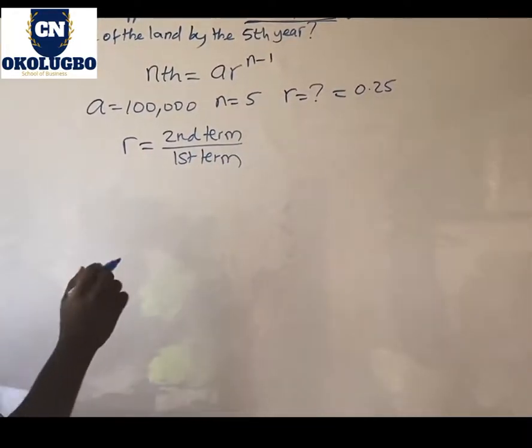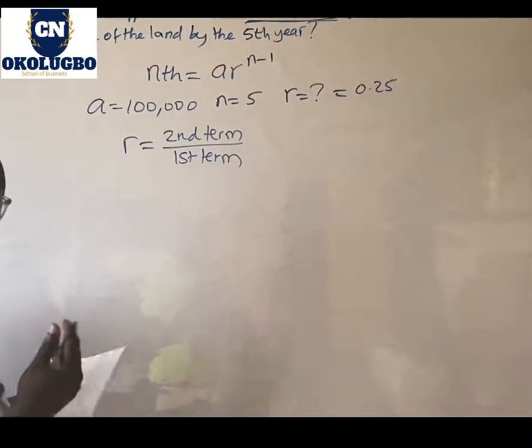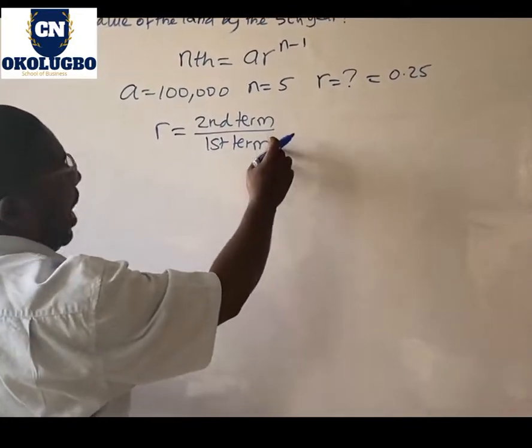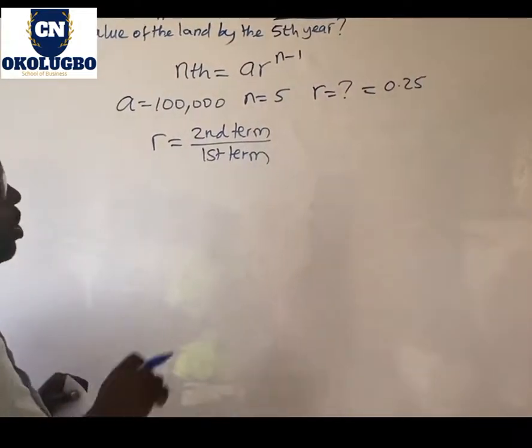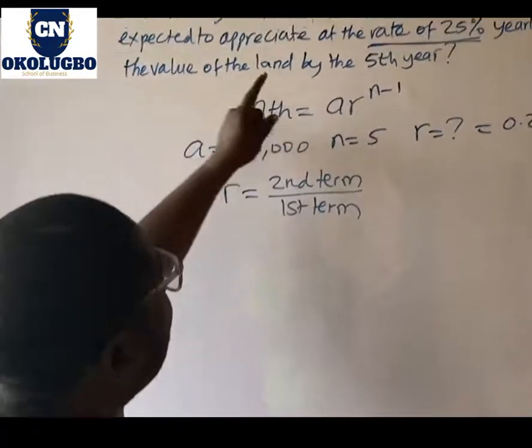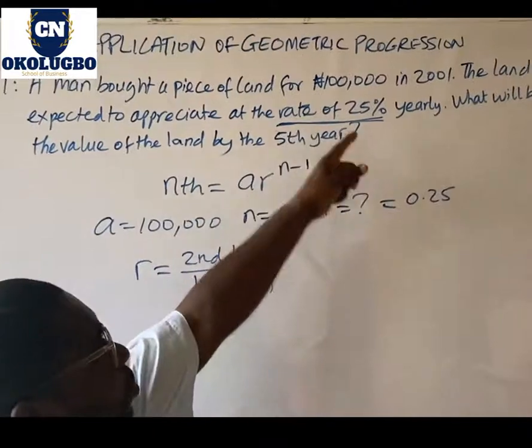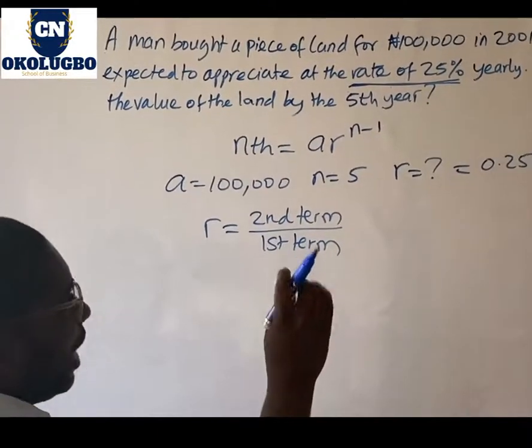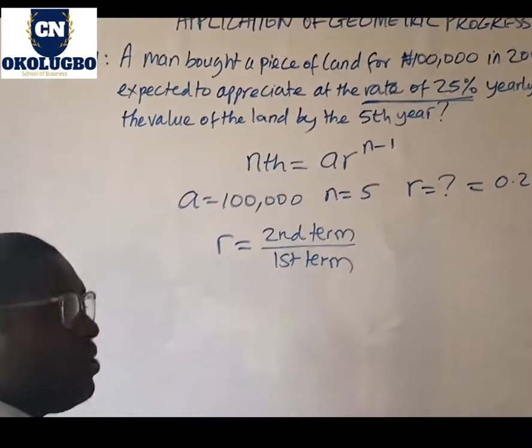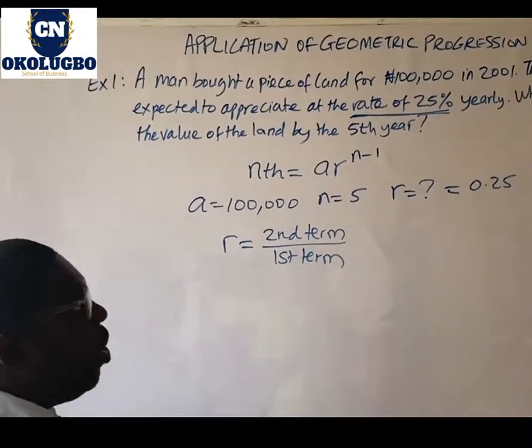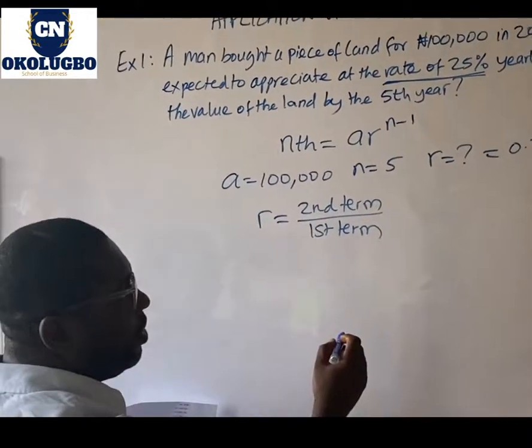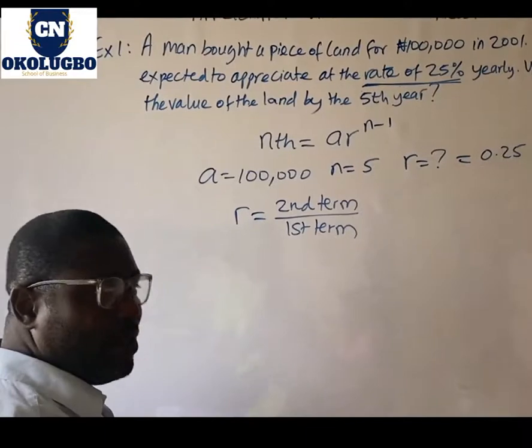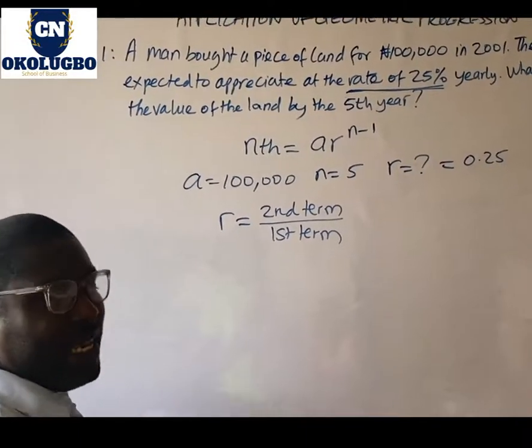Because we know that the formula for defining rate is 2nd term divided by 1st term. Now what is the 2nd term in this case? We don't know that, but we know the 1st term. So we have to calculate what the 2nd term will be. We're told that the land will appreciate at a rate of 25%, which means that we have to calculate what that rate of increase will be on the 1st year, which is 100,000, and add it to the value of the land in the 1st year so that we can know the value of the land in the 2nd year.